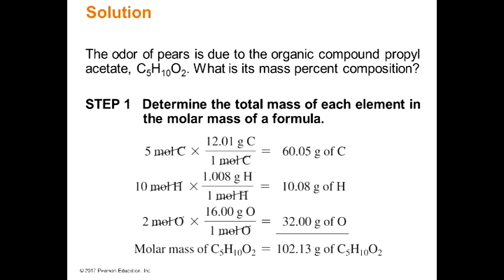The odor of pear is due to propyl acetate, C5H10O2. We have five moles of carbon, ten moles of hydrogen, and two moles of oxygen. The molar ratio of hydrogen to oxygen is 10 to 2 — don't reduce it, just leave it. The molar ratio of carbon to hydrogen is 5 to 10. We run those mole values through the periodic table to get the molar mass, which we report as grams per mole.